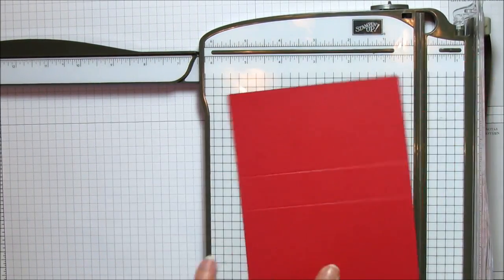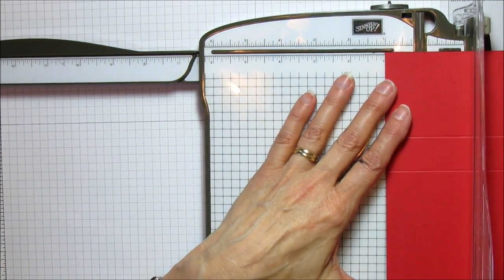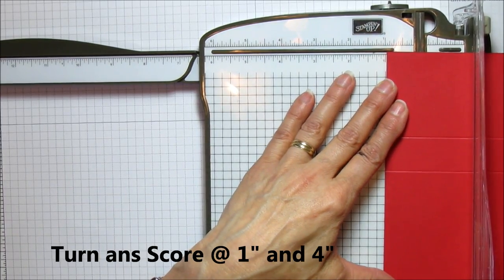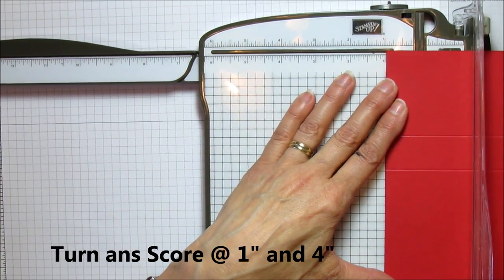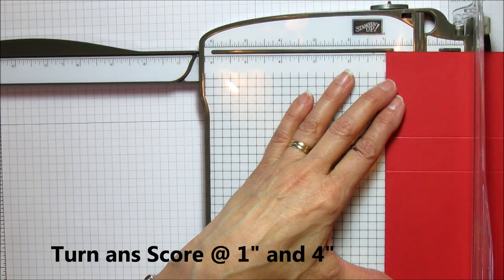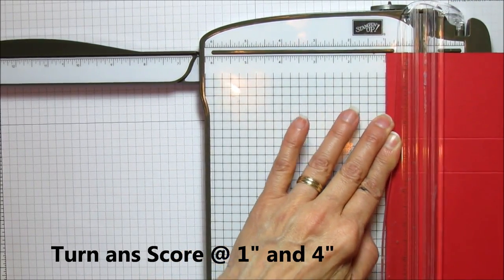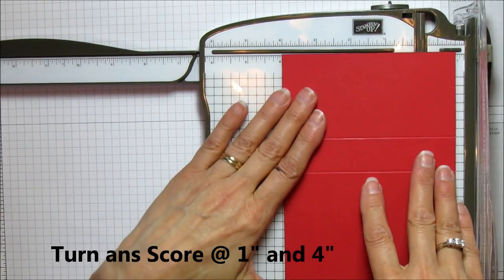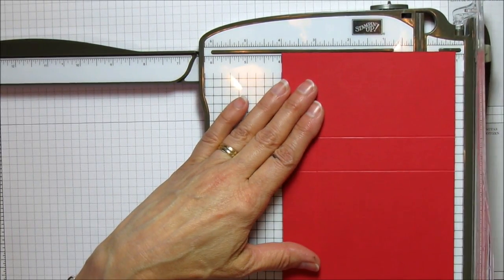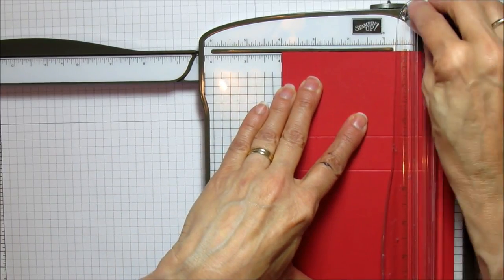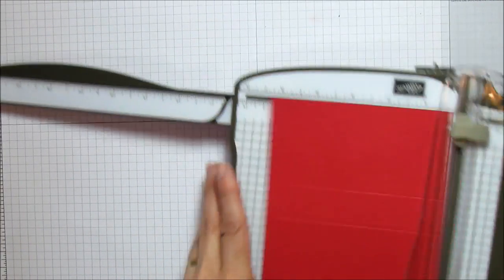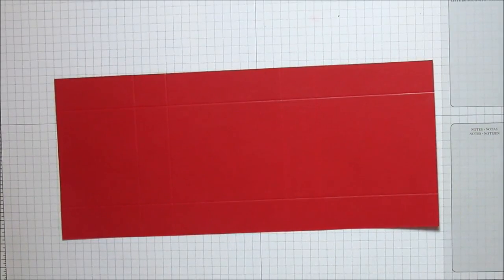On this side we're going to score it at 1 - make sure it's straight, you don't want your box to be crooked - and then at 4. So that is it.